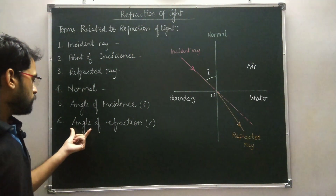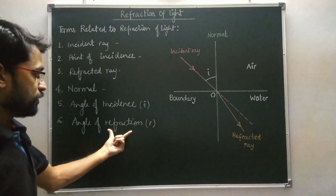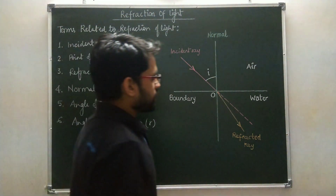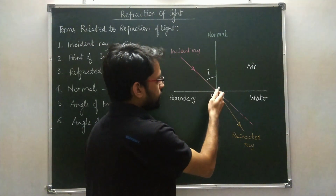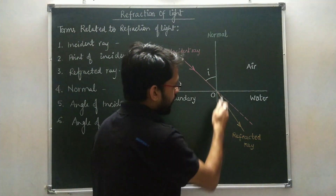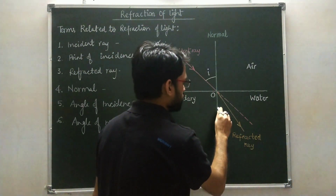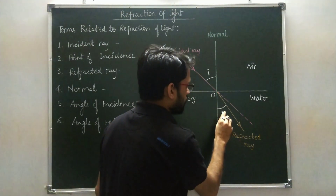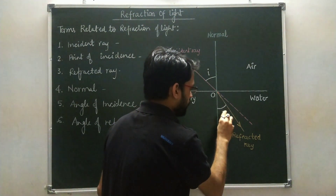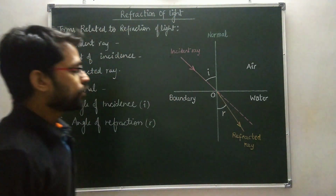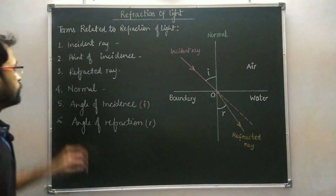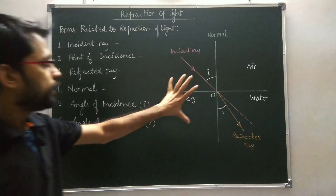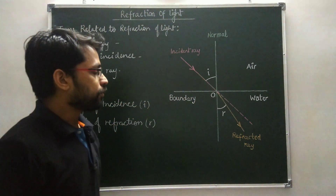The last term is angle of refraction. The angle of refraction is the angle between the normal and the refracted ray. This is the angle of refraction, R. So these are the terms associated with the refraction of light.